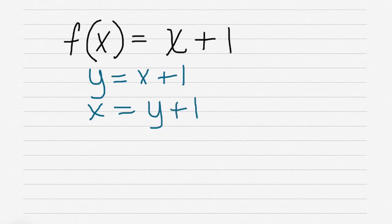We want y by itself, so I'm going to subtract 1 from this side. Whatever I do to one side I have to do to the other, so on this side I have x - 1 = y.